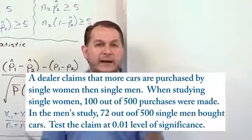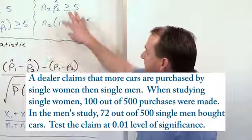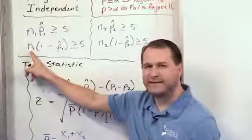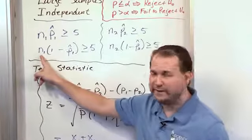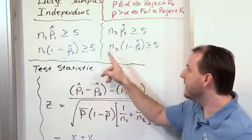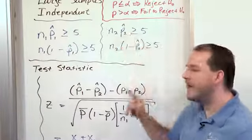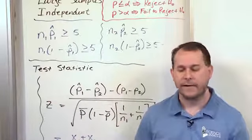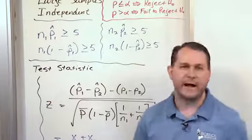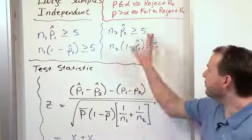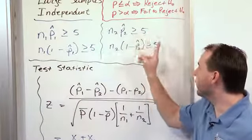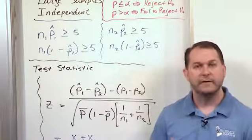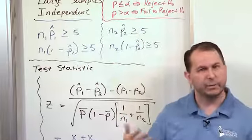So we're going to assume that it is a large number of samples here, and that means that these constraints are met. For the problem, you could pull the information out. I know that this is the sample size from women in this case, and this is the sample size of men in this case. And P1 hat and P2 hat, those are just the sample proportions that we get, 100 out of 500 for the women and 72 out of 500 for the men. And you can plug those in here and verify that everything's greater than or equal to 5.